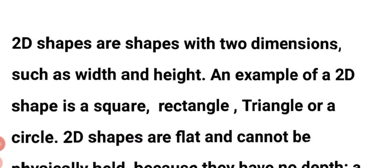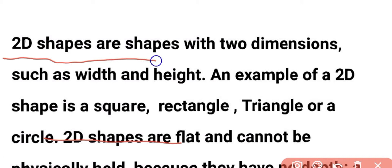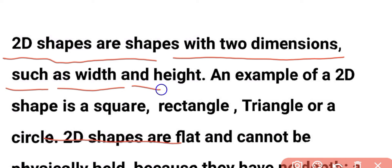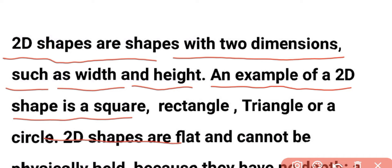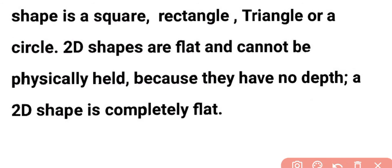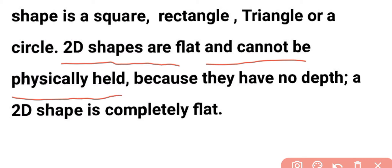Do you know what a 2D shape is? 2D shapes are shapes with two dimensions, such as width and height. An example of a 2D shape is a square, rectangle, triangle, or a circle. 2D shapes are flat and cannot be physically held because they have no depth.